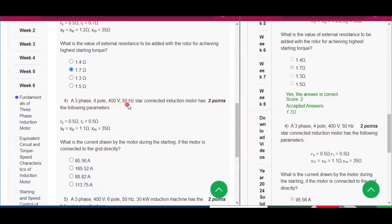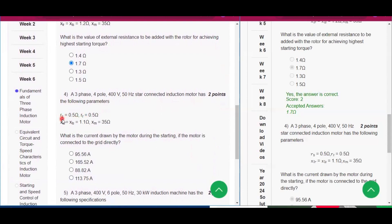Question number four: A three-phase four-pole 400 volt 50 hertz star connected induction motor has the following specification: Rs equals 0.3 ohm. Parameters: Rs, that means stator resistance; Rr, that means rotor resistance; Xlr equals Xls equals 1.1 ohm; Xm equals 35 ohm.